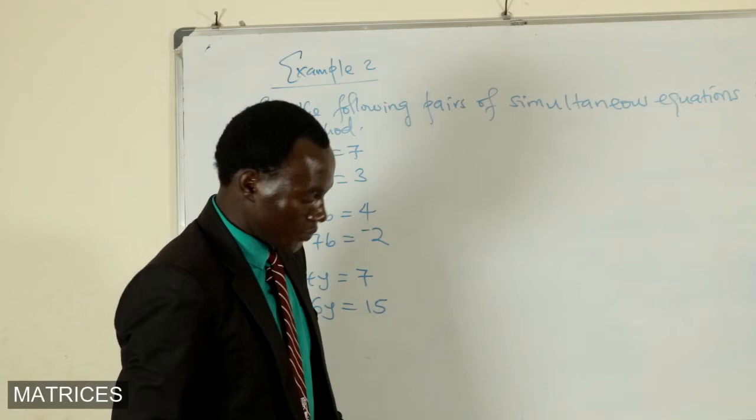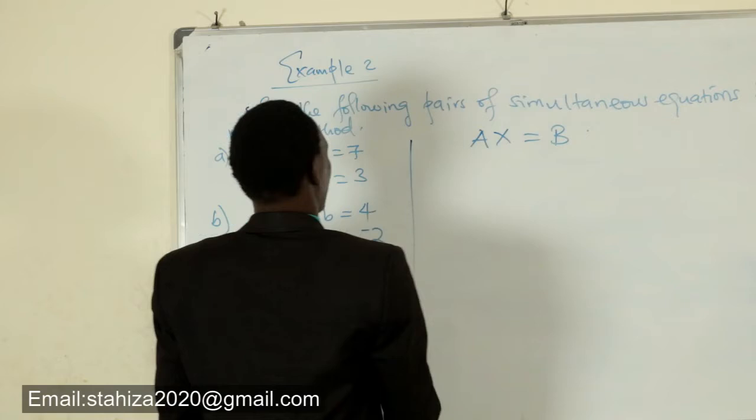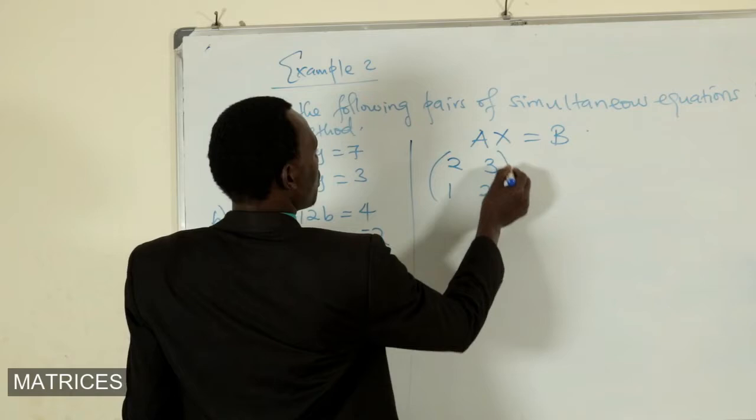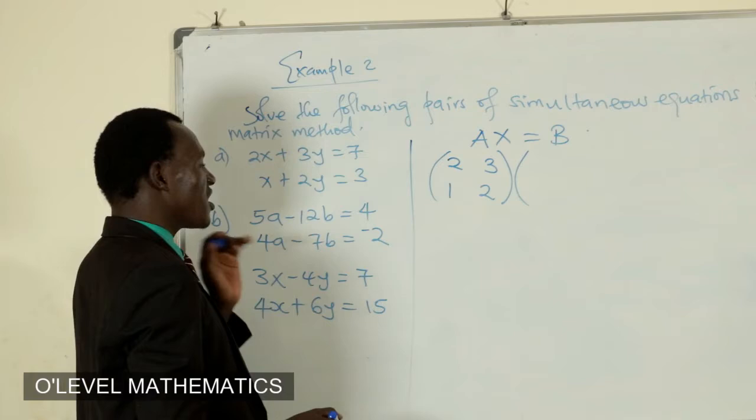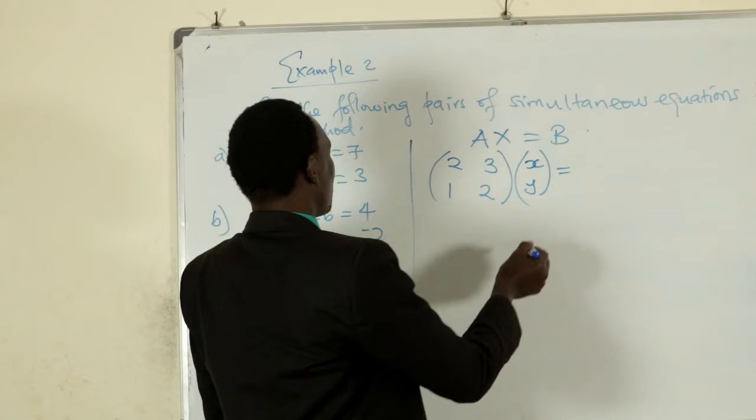By inverse method, we first express these equations in the form Ax is equal to b, where A is a matrix consisting of the coefficients of the variables: the coefficients are 2, 3, 1, 2, times x. This is a matrix consisting of the variables in their order. We have first it is x and then y follows. Is equivalent to b, and b consists of the resultants, 7 and 3.